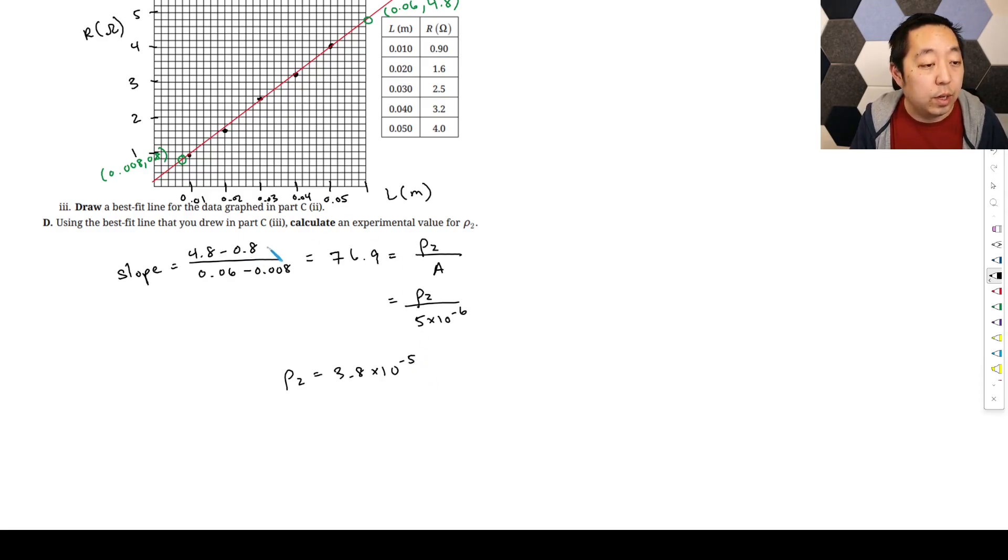So ρ₂, you're going to multiply these two, and you get 3.8 times 10⁻⁵. What are the units? Let's go back to our graph. This is ohms, this is meters, so this is ohms per meter. The area was meters squared, so multiplied by meters squared, ohms per meter times meters squared is just ohm-meters.